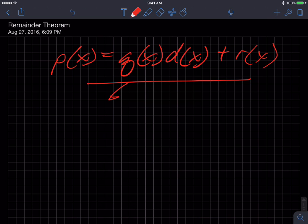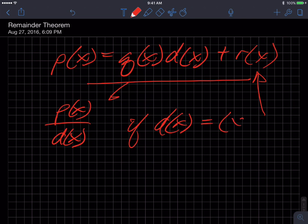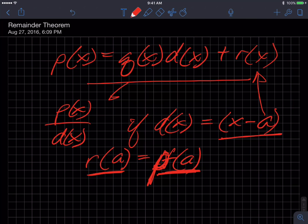So the remainder theorem states that the remainder of a division of a polynomial, for instance P(X) divided by D(X), the remainder of that division, if D(X) is of the form X minus A, then the remainder is equal to P of A. In other words, if I do the division, the remainder will be the same as if I took the original function P(X) and put A into it.